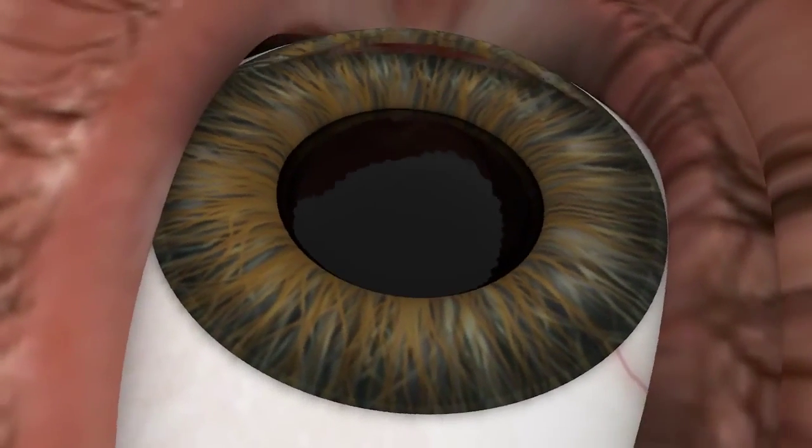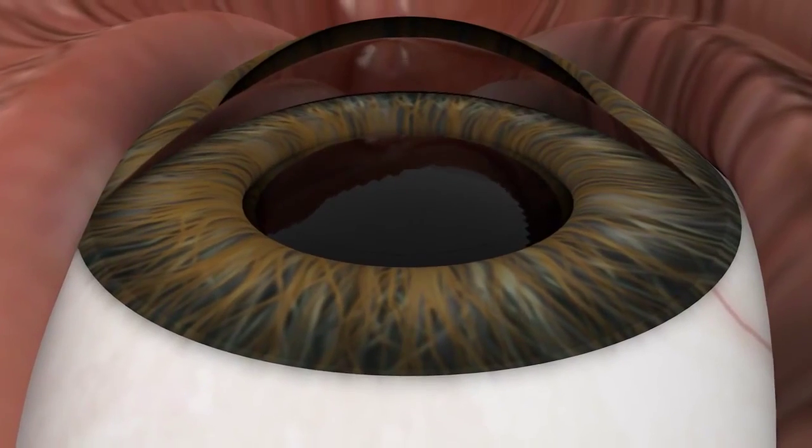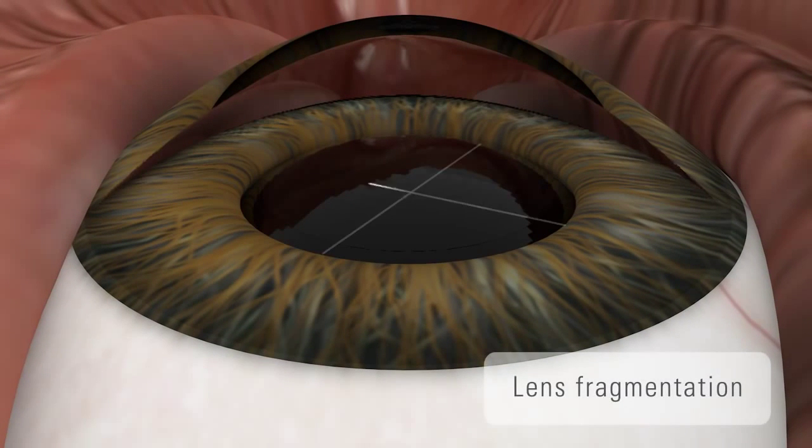All the plenary sections for the femto cataract surgery are then performed. The lens can then be fragmented with different patterns.